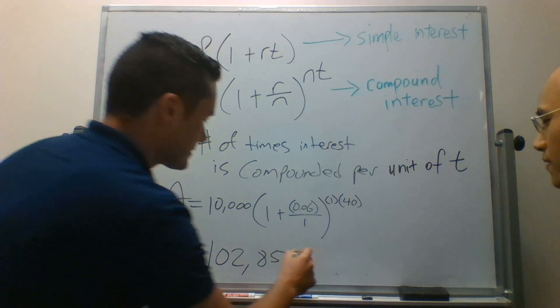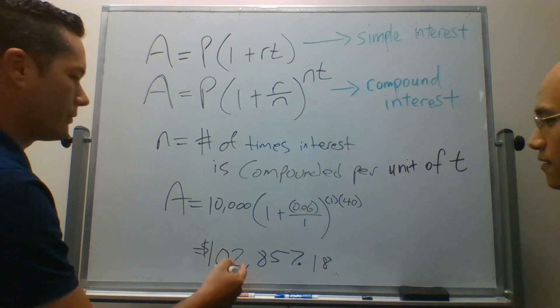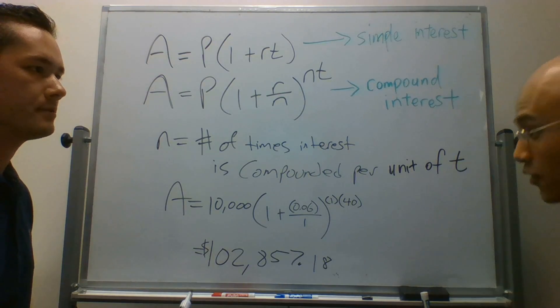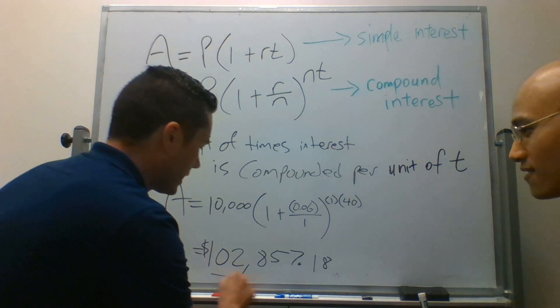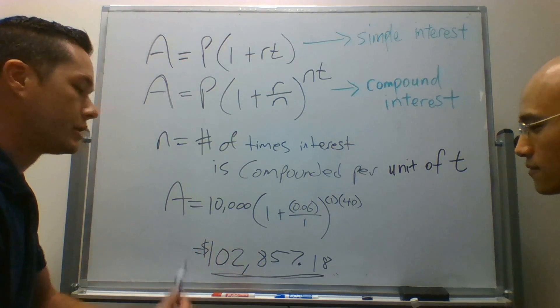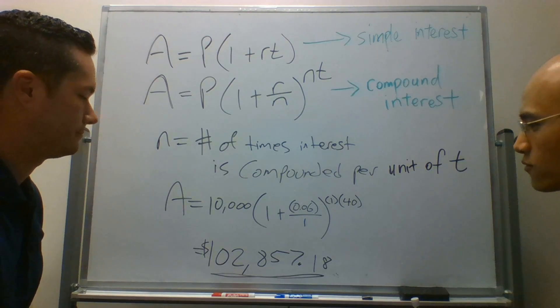And that's the thing - if you recall, the value that we ended up with for simple interest was $34,000. And now we're talking about $102,000. So more than triple what we had for simple interest.